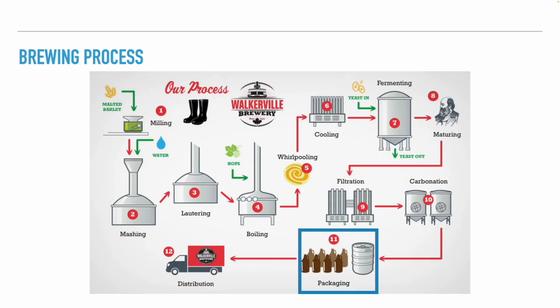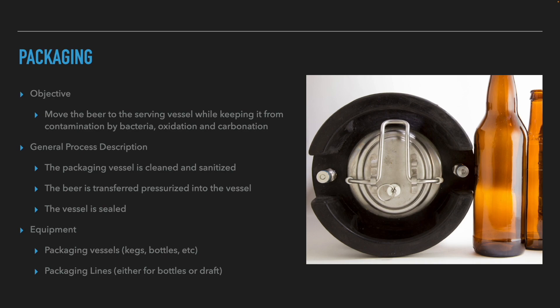After carbonation, the beer is ready for packaging. The objective of packaging is to move the beer to the serving vessel while keeping it free from contamination, oxidation, and loss of carbonation. The process starts with cleaning and sanitizing the packaging vessel, then the beer is transferred pressurized into the vessel, and finally the vessel is sealed. The equipment needed is packaging vessels such as kegs and bottles, and packaging lines for either bottles or draft.